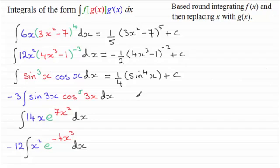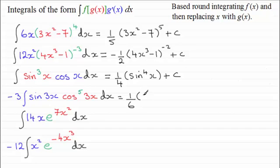For the next one, f of x is based on x to the power 5, and g of x is cosine of 3x. Integrating x to the power 5 gives one sixth x to the power 6. In place of x we write cosine of 3x, all to the power 6. So we end up with one sixth cos to the sixth of 3x, plus C.